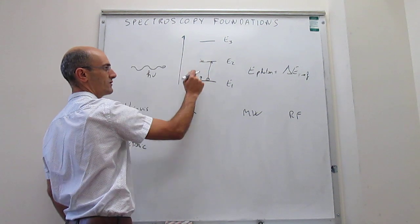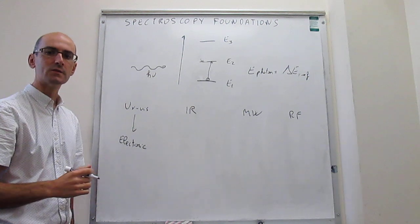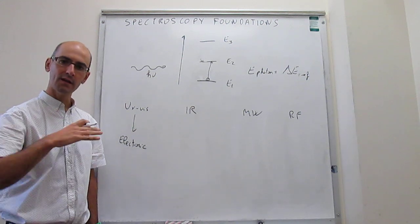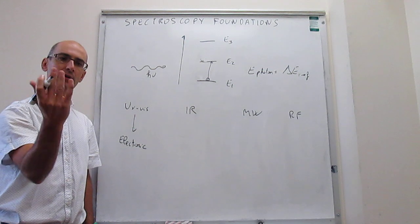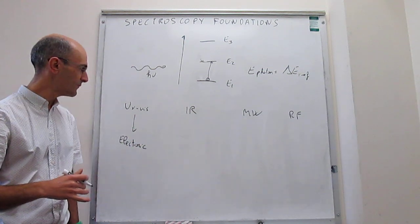So the energies of those two states will be different, and that's what you're actually doing in UV-Vis. Those photons are quite energetic, and you can promote electronic excitation from a bonding orbital, perhaps, to an anti-bonding orbital, and so forth.